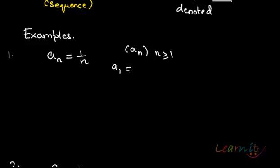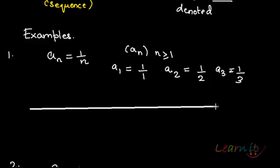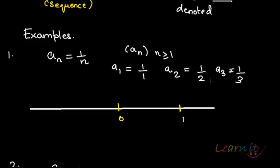So what will be my a_1? I will just put n equals to 1 — it gives me 1/1. a_2 will be 1/2, a_3 will be 1/3, and so on and so forth. On the real line, this sequence will look like: here you have 0, here you have 1 — 1 will be the maximum because after that there will be all fractions: 1/2, 1/3, 1/4 and so on, keeping on decreasing from here. We will not talk about the limit of this sequence right now; we will see later how it approaches a certain limit or not.